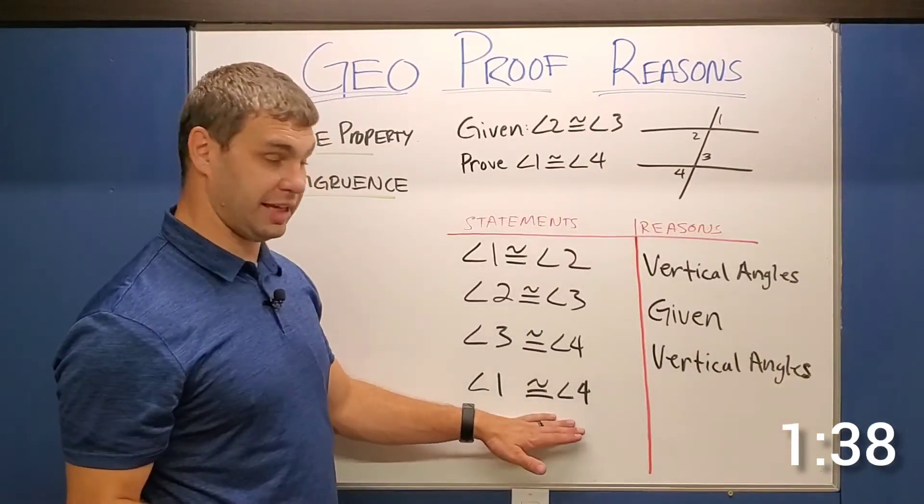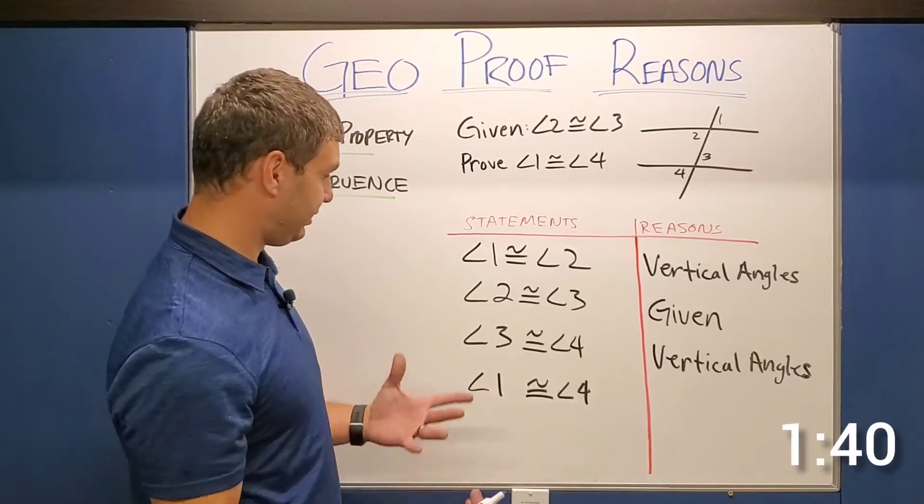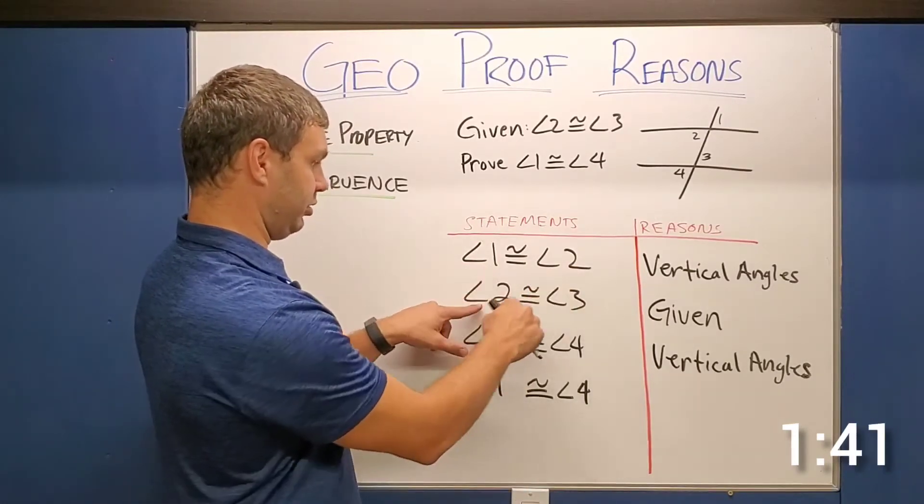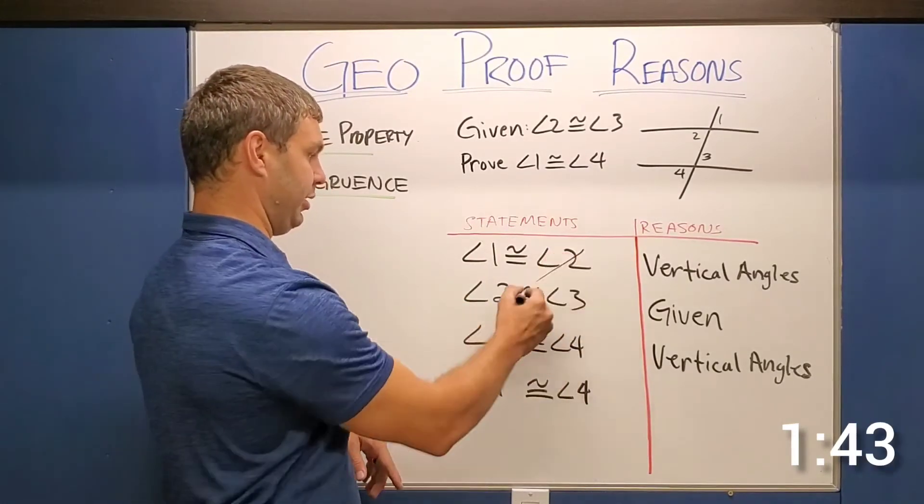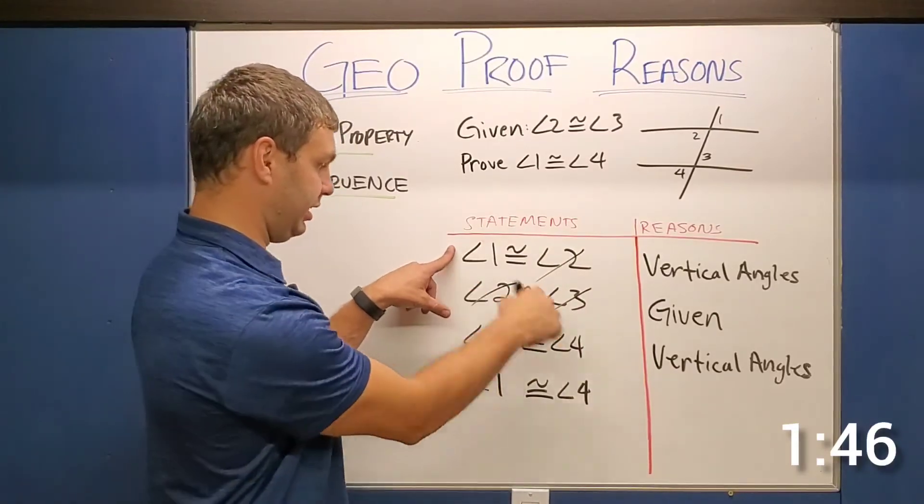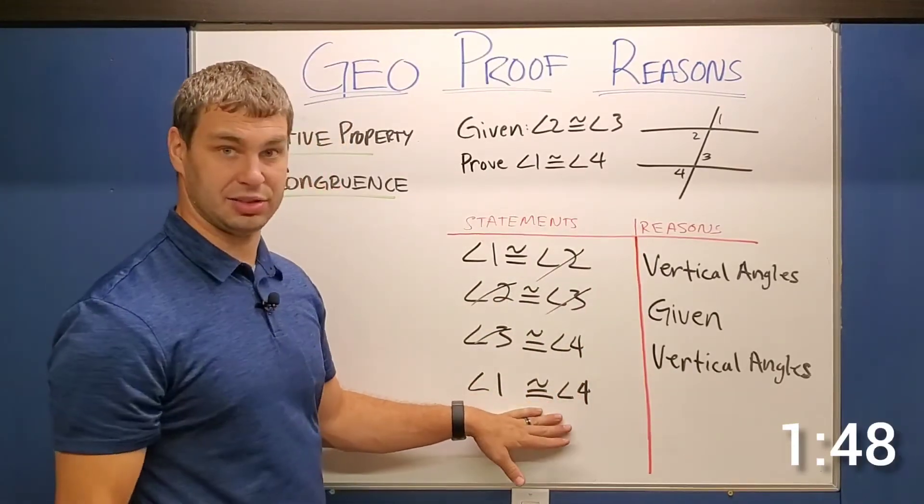Which of course you guessed it, our last line that leaves us with transitive property. One is congruent to two, two congruent to three, three congruent to four. We actually cross out two parts in the middle there so that one is congruent to angle four. That is the transitive property.